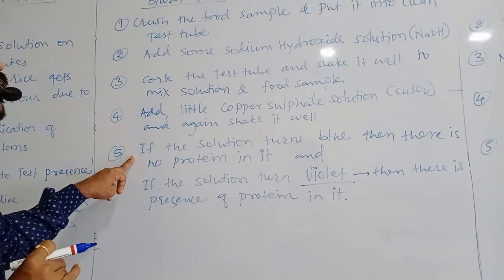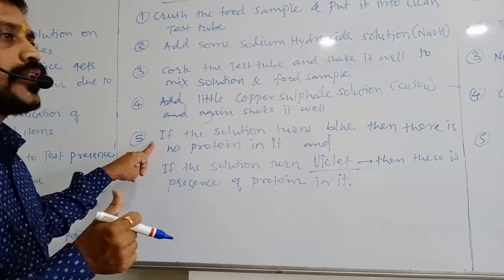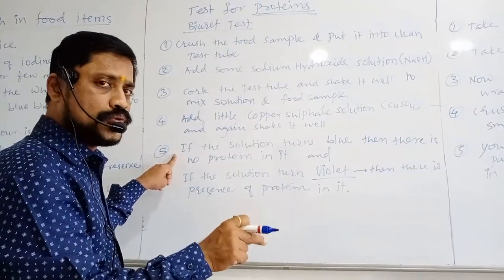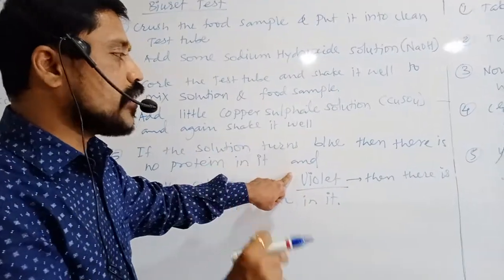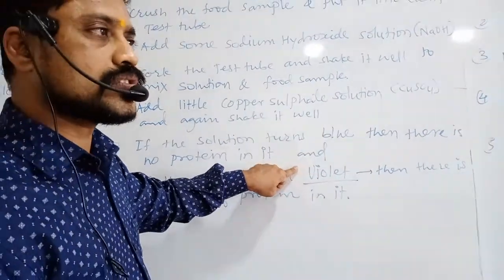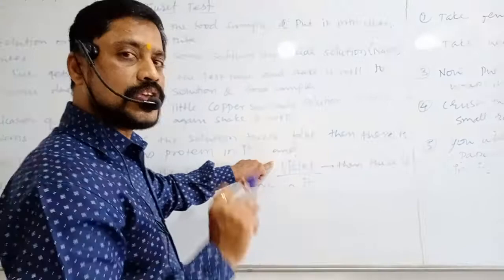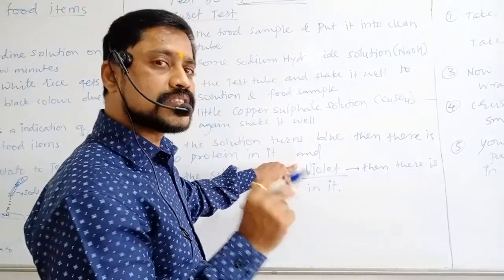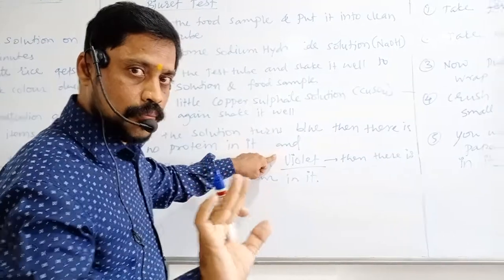If the solution turns into blue then there is no presence of proteins in it. And if the solution turns violet then there is presence of protein in the given food item. Now we will go and understand systematically. So pay attention.